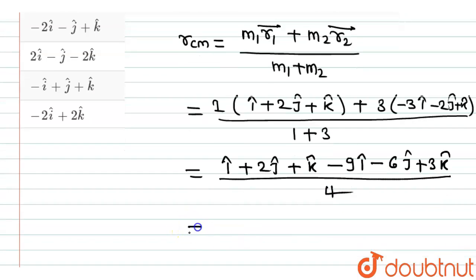So it will be equal to i cap minus 9 i cap, minus 8 i cap, plus 2 j cap minus 6 j cap, it will be minus 4 j cap. K cap minus 3 k cap, now this minus minus it will be plus, so k cap plus 3 k cap, it will be plus 4 k cap divided by 4.